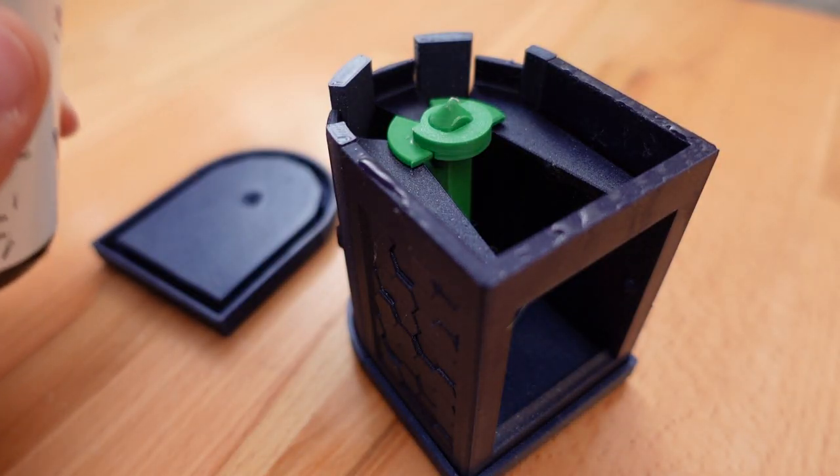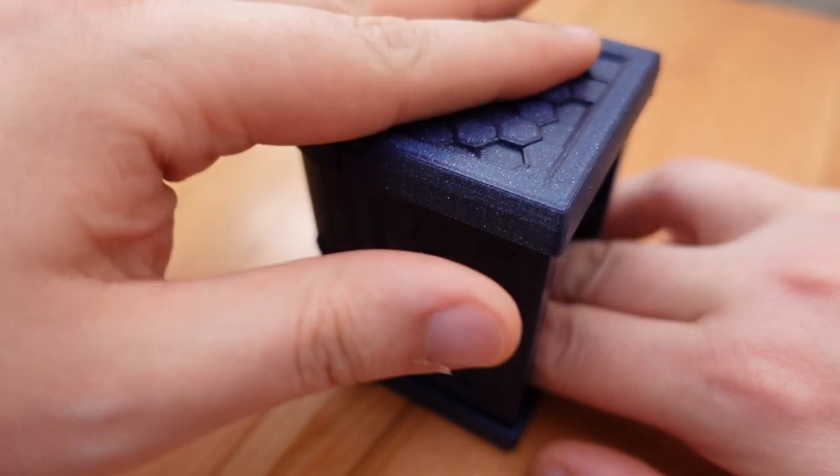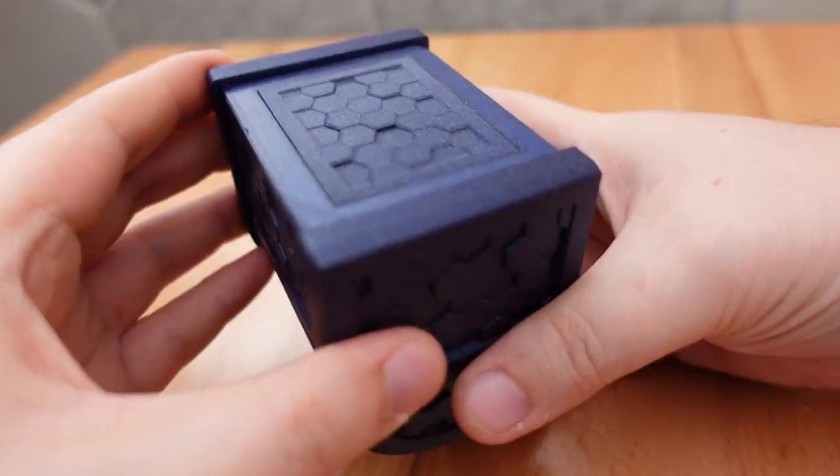If all is well, glue the end cap on. Only apply glue to the bottom frame. We've gone too far to accidentally glue the sliding latches into place. Once the glue is set, add the bottom lid and lock the puzzle.